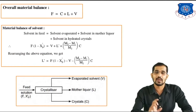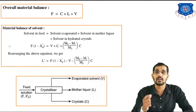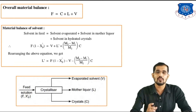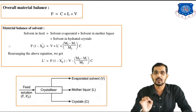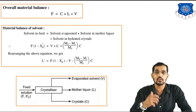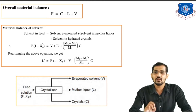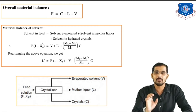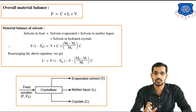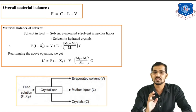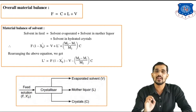Now we will take the component balance — first the material balance of the solvent, then the material balance of the solute. For the solvent balance: solvent in feed = solvent evaporated + solvent in mother liquor + solvent in hydrated crystals. In notation: F(1 − XF') = V + L' + [(M2 − M1)/M2] × C.